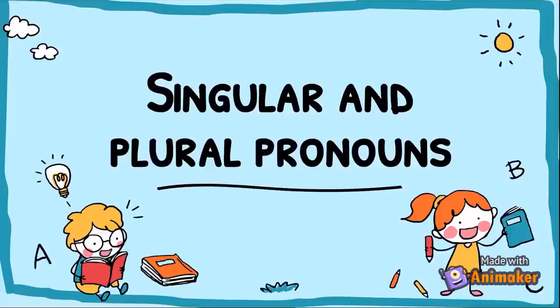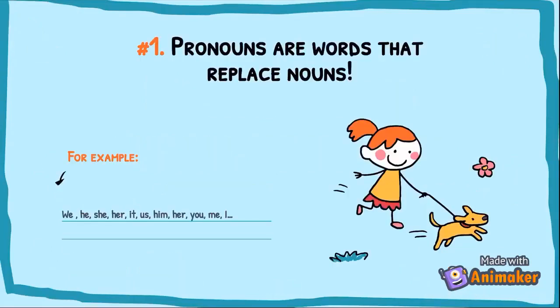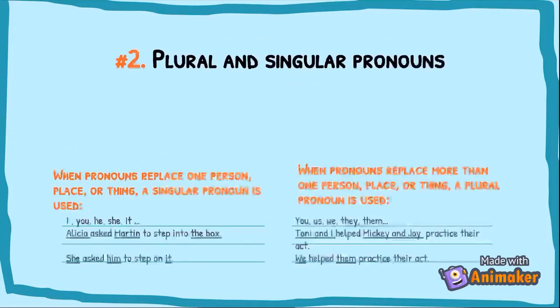My presentation is about singular and plural pronouns. Pronouns are words that replace nouns — for example, we, he, she, her, it, us, him, you, me, and I are pronouns. When pronouns replace one person, place, or thing, a singular pronoun is used, like I, you, he, she, and it.